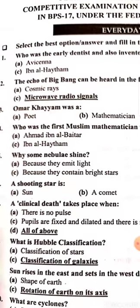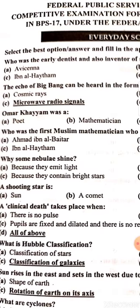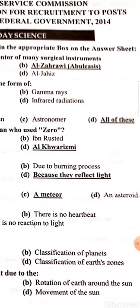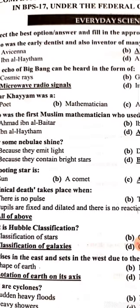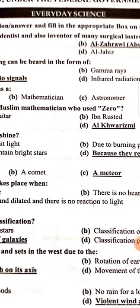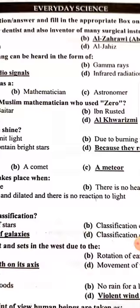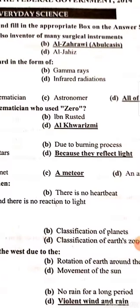The echo of the Big Bang can be heard in the form of microwave radio signals. Umar Khayyam was an astronomer, mathematician, and a poet. Who was the first Muslim mathematician who used zero? Al-Khwarizmi.